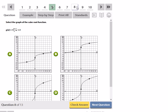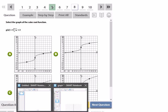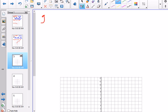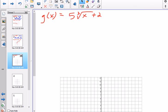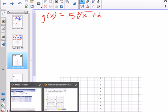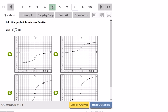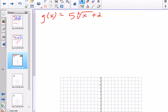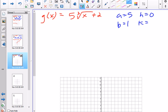Let's graph the cube root function. We'll graph this on our own, 5 cube root of x plus 2. G of x is equal to 5 cube root of x plus 2. So A is 5, B is 1, H here is 0, and K is 2.